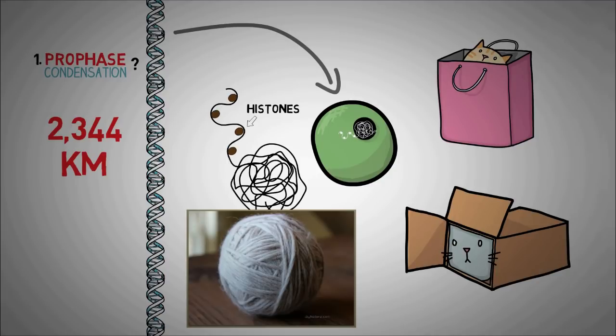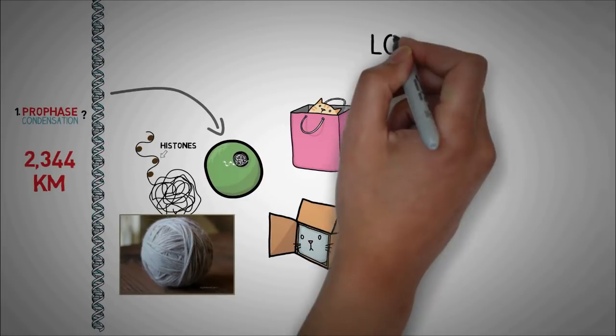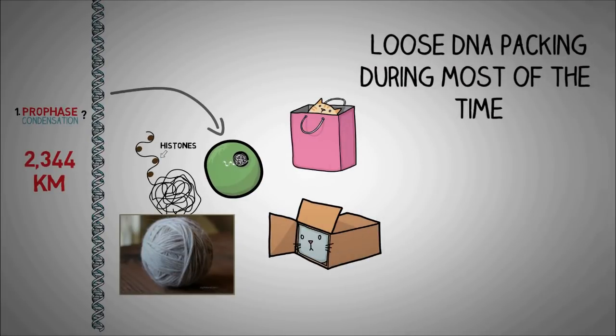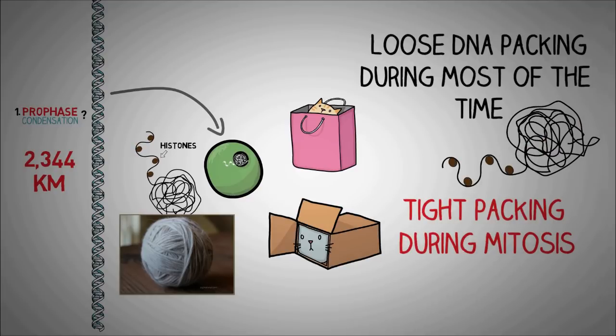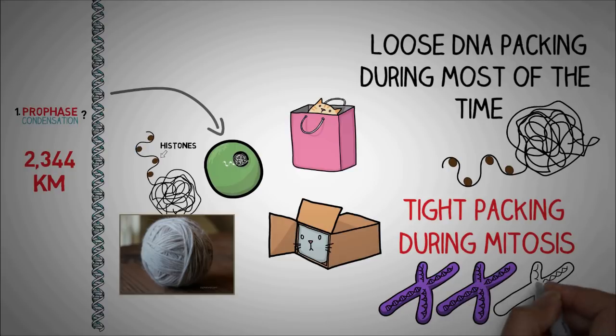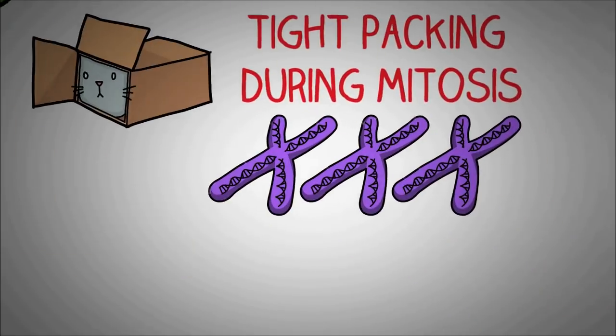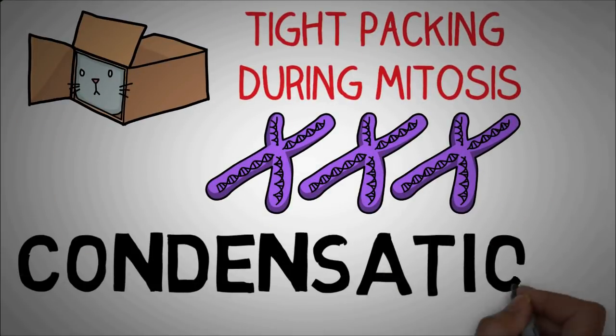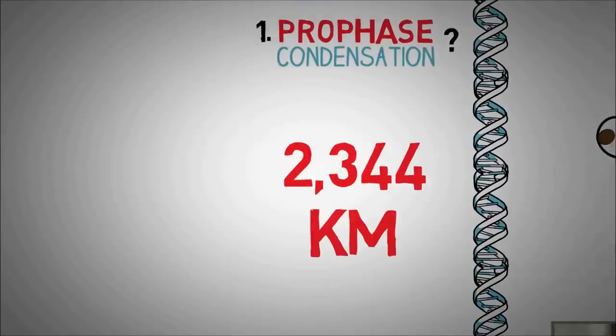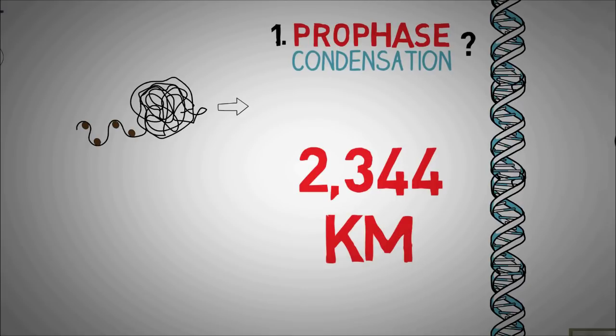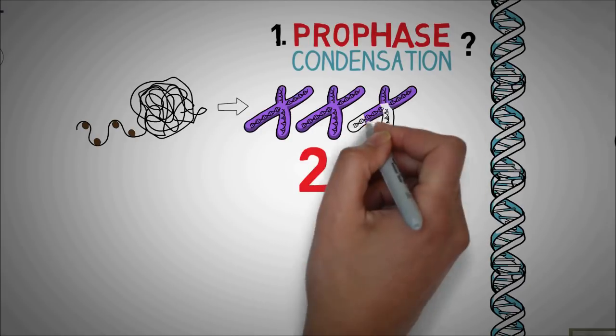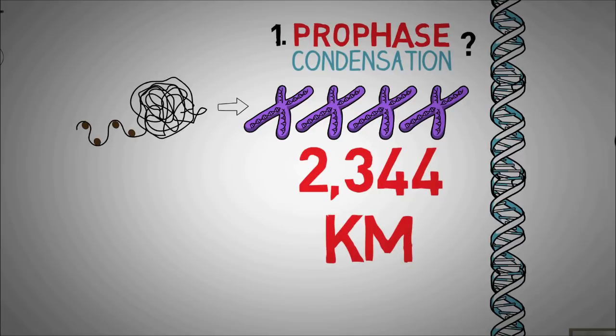Now this packing can be loose or tight depending upon what the cell wants to do at that time. If the cell is living fine and doing its stuff, the packing is loose so that the cell can read what's on the DNA to form proteins and other stuff. But during mitosis, we need a tight packing because it is more stable and prevents DNA damage when chromosomes divide in the cell. This tight packing is known as condensation. So the first thing that the cell does as it starts with the process of mitosis is to pack its DNA into chromosomes so that it doesn't get damaged in the coming steps.